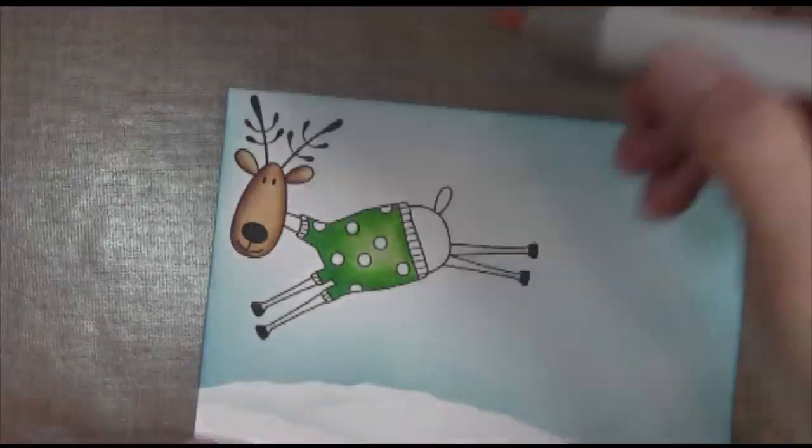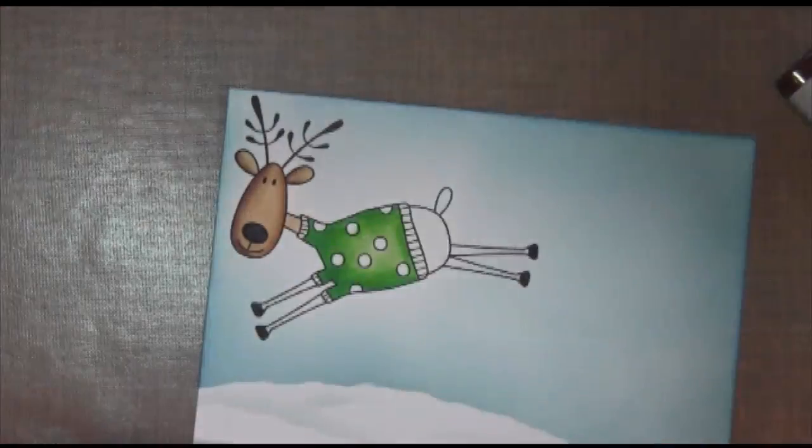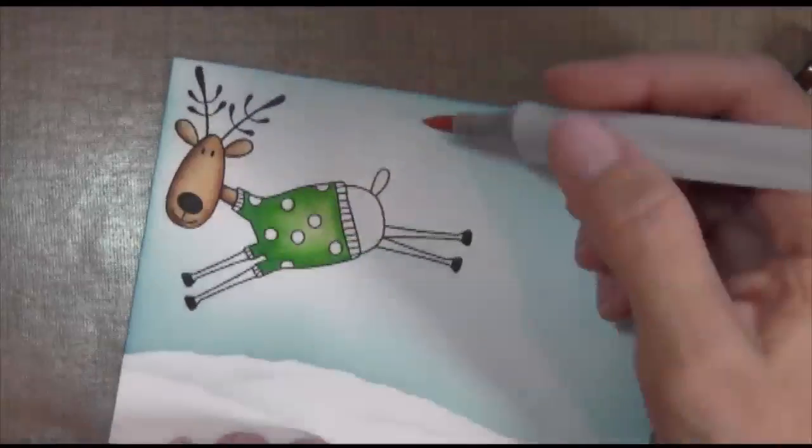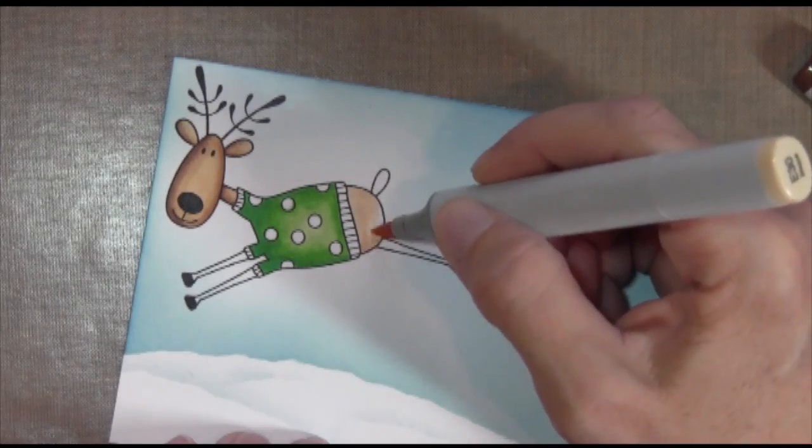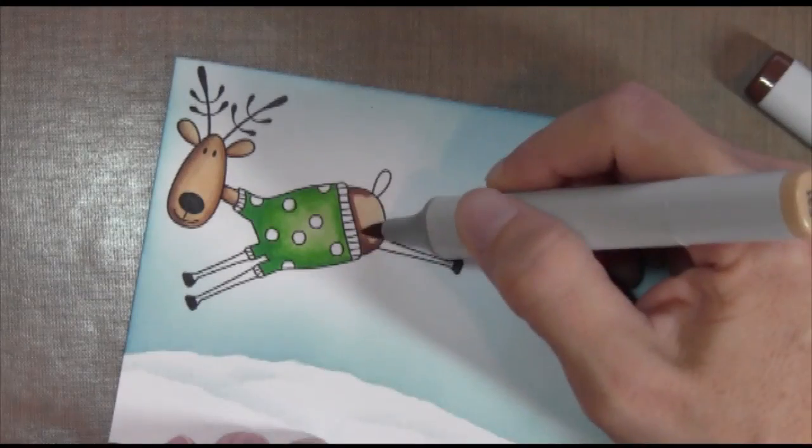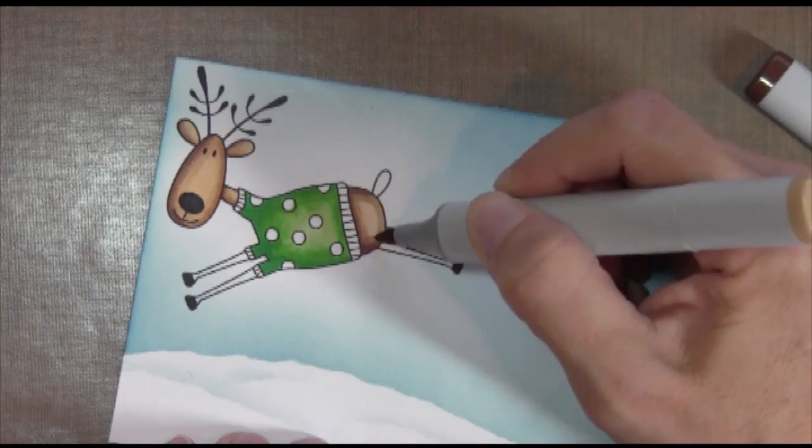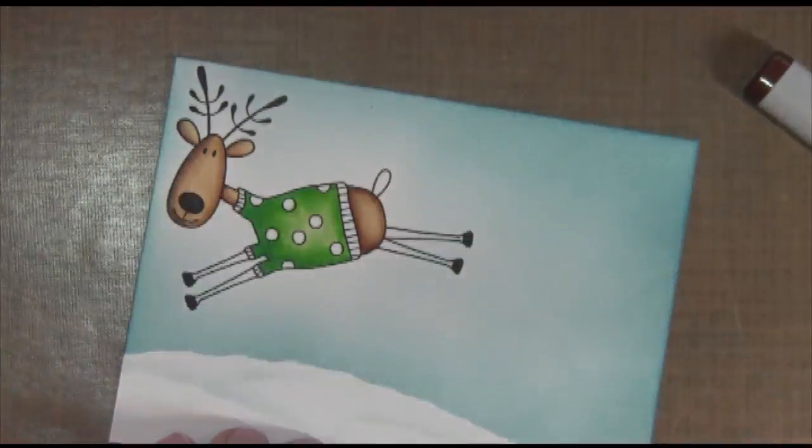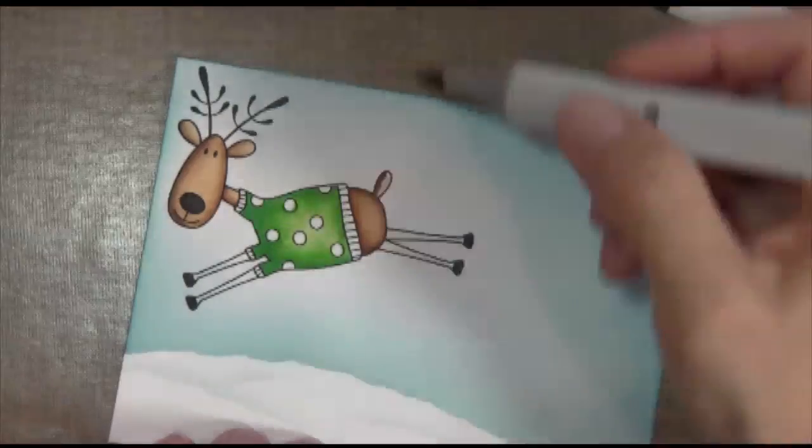I'm using the same colors as I used on the house, just so I get a nice good match there. And also notice that I'm doing this piece by piece, and that's because the Copic marker ink will dry a little bit and it will be harder to blend. So as long as you work in little areas, it stays wet pretty well and you can blend it.